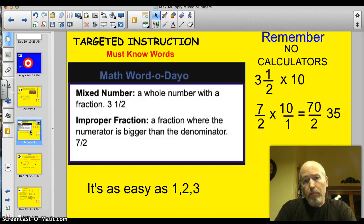Here we go. Must know words. Mixed number. That's a whole number with a fraction, like three and a half. An improper fraction, that's a fraction where the denominator is smaller than the numerator or numerator bigger than the denominator.